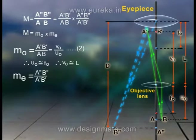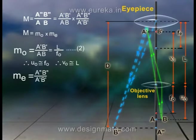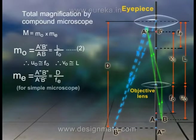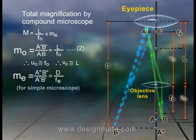Therefore, magnification MO = L / FO. Now the eyepiece lens is acting as a simple microscope, so the magnification obtained by the eyepiece lens is given by ME = D / FE. Using the equations for MO and ME, the total magnification by the compound microscope is given by M = (L / FO) × (D / FE).